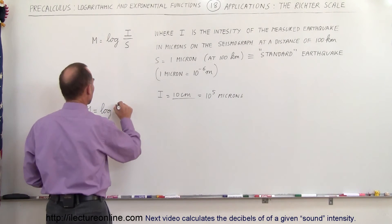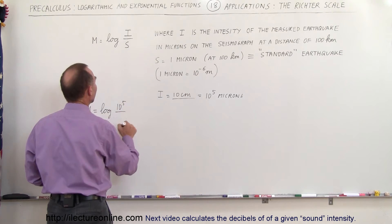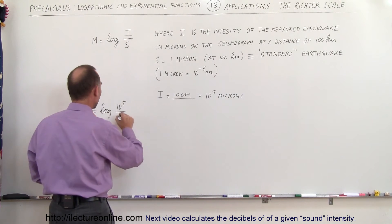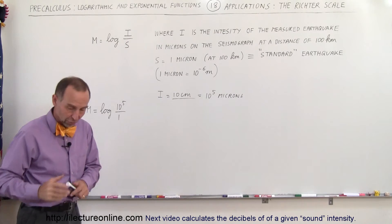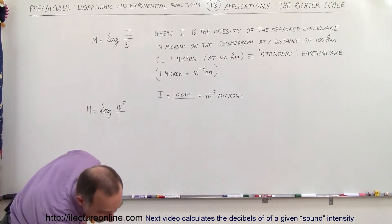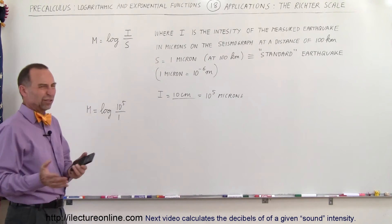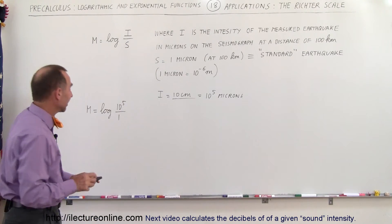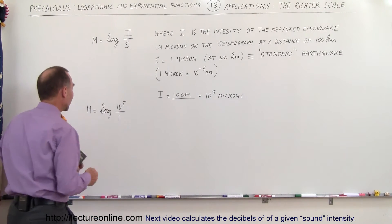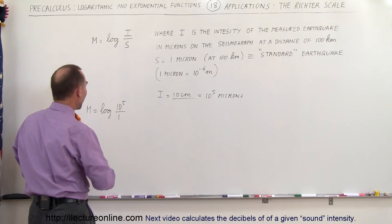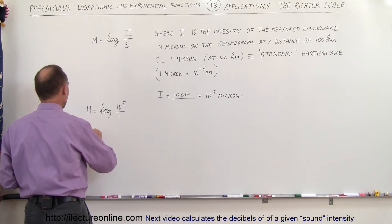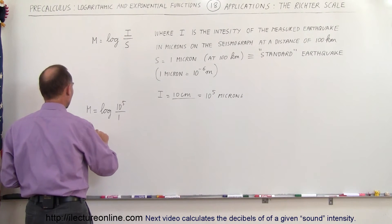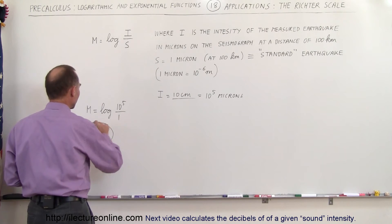So it would be 10 to the fifth microns divided by the standard, which is one micron. When we take the log of 10 to the fifth, we don't even need a calculator — the log of 10 to the fifth is simply 5. Therefore the magnitude of that earthquake is equal to 5.